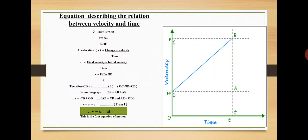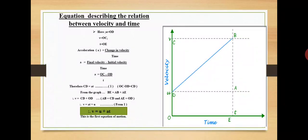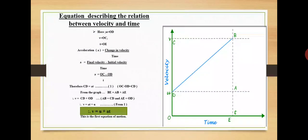Equation describing the relation between velocity and time: the graph shows the change in velocity with time of a uniformly accelerated object. The object starts from point D in the graph with velocity u. Its velocity keeps increasing, and after time t it reaches point B on the graph. The initial velocity of the object u is equal to OD, the final velocity v is equal to OC, and time t is equal to OE.